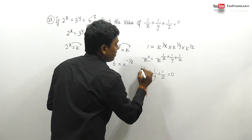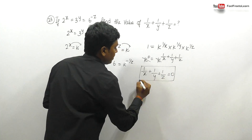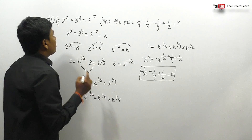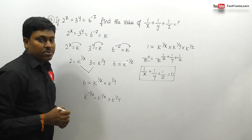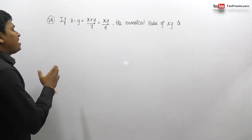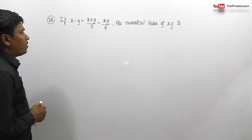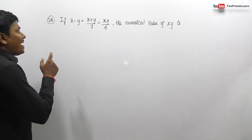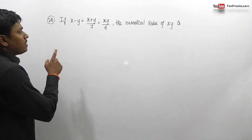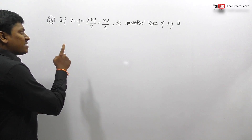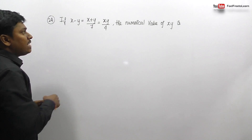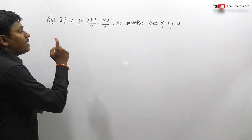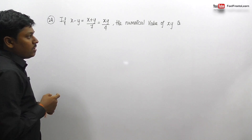The answer for question number 23 is 0. Question number 24: if (x - y) = (x + y)/7 = xy/4, find the numerical value of xy.